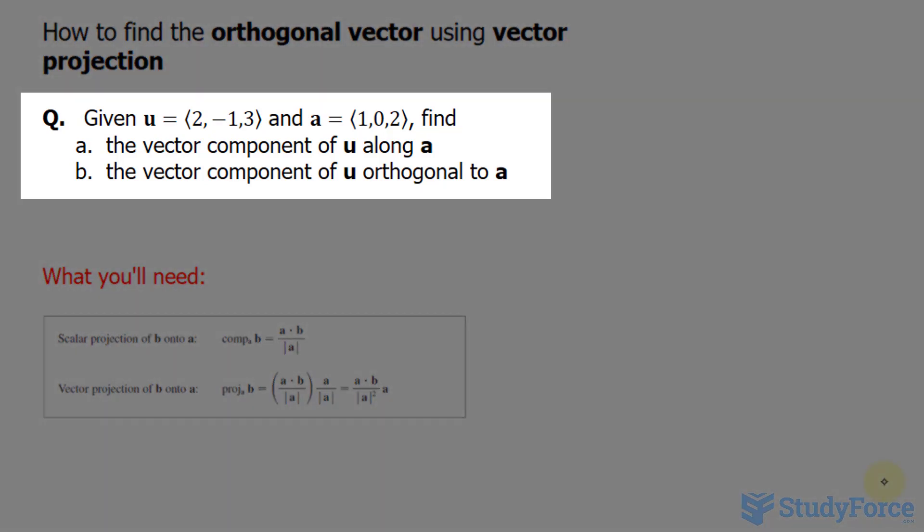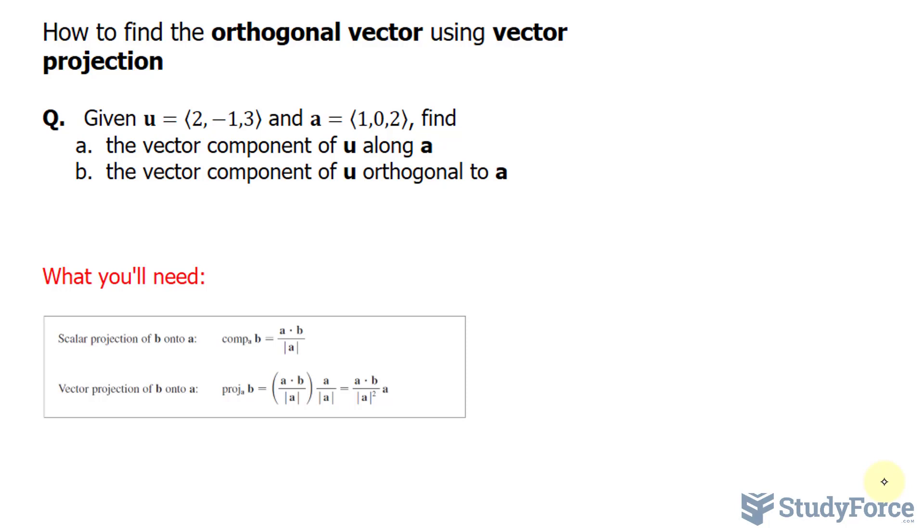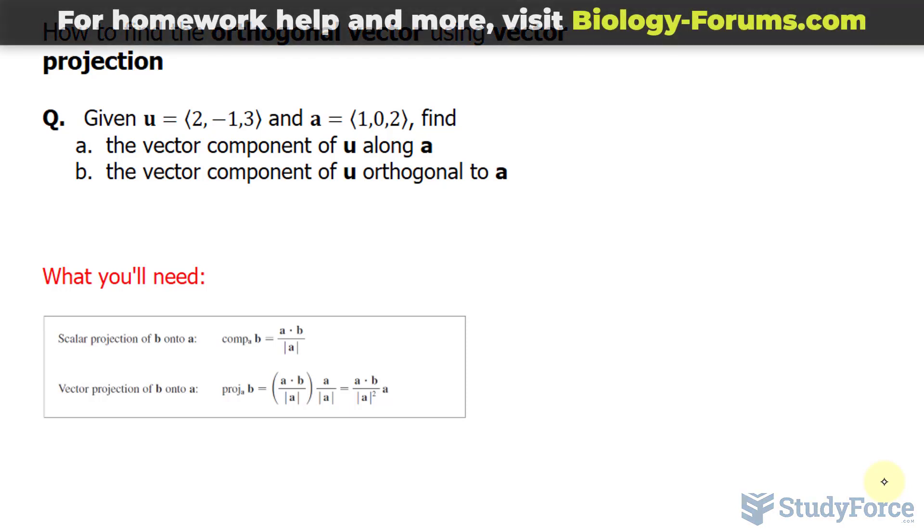The question we're answering reads: given the vector u with the x, y, and z components shown here, and the vector a, find the vector component of u along a, and for b, the vector component of u orthogonal to a.